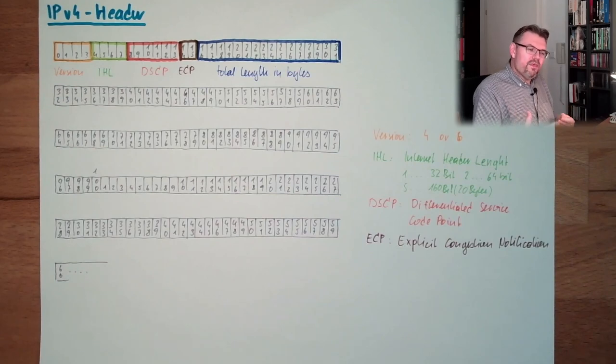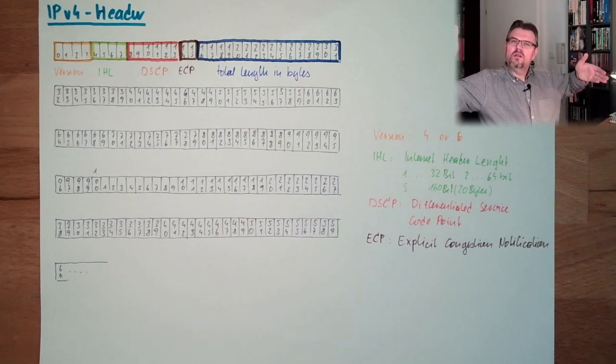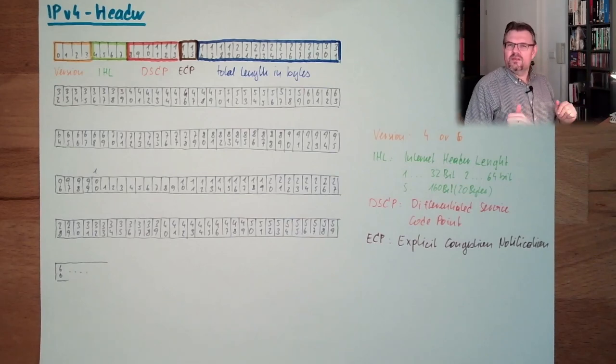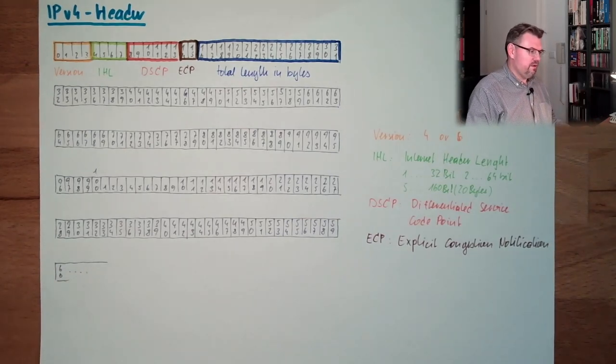If something below does not allow that big of a byte, for instance Ethernet, then we have to fragment those things. Fragmenting, I will explain shortly.